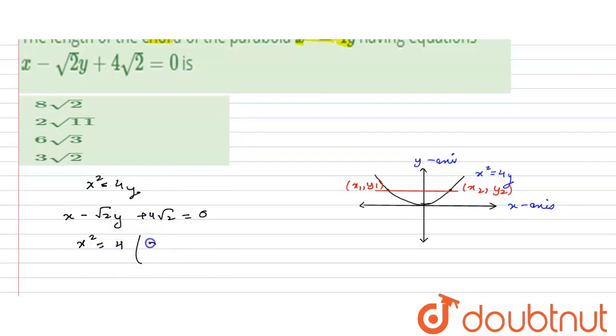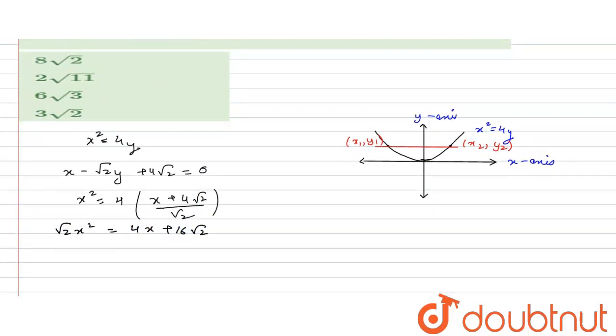So we have √2x² is equal to 4x plus 16√2. So now this is a quadratic equation. So √2x² minus 4x minus 16√2 is equal to zero.